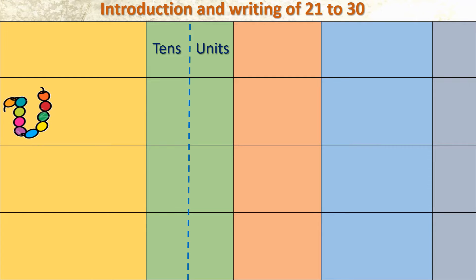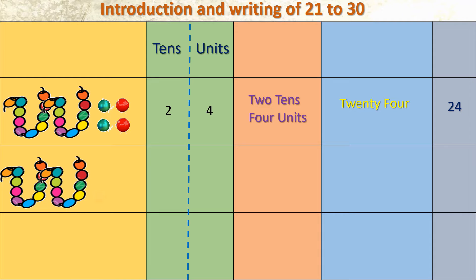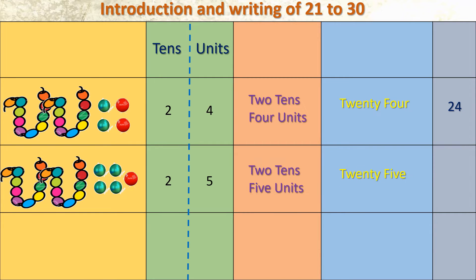Next number: two strings of beads — here we can see two tens and four units. Units means single, single beads. Two tens and four units — number is 24, and in numerals 20 and 4. Now we are going to add one more bead: two tens and five units. Number formed is 25, and in numerals 20 and 5.